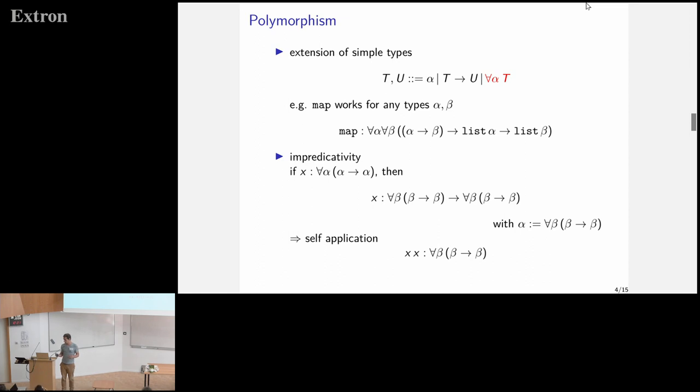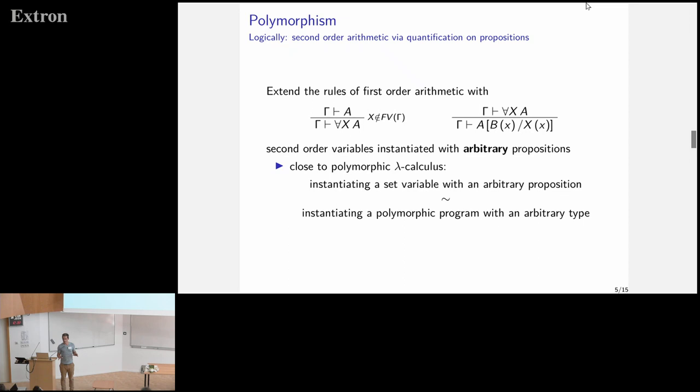You can do very weird things using polymorphism. As an example, if you have some element which has the type of the identity, then you can instantiate this with the type of the identity itself and then apply your element to itself, which is very weird. Of course, you can't put a lambda and apply it to itself because you would get non-termination. But still, applying something to itself is weird. Logically, these polymorphic types correspond to quantification on propositions. In the interpretation of second-order arithmetic in System F, type instantiation exactly corresponds to instantiation of universal quantification on propositions or on sets of natural numbers.